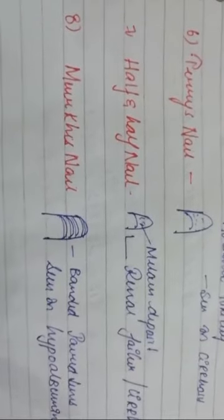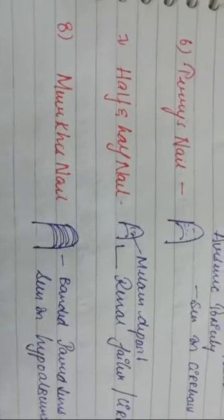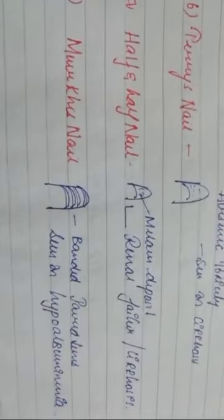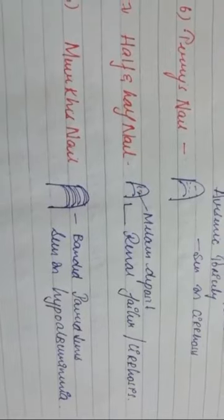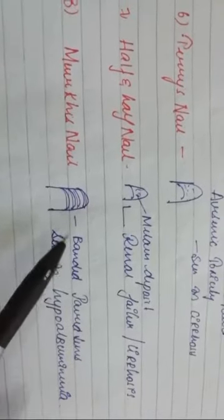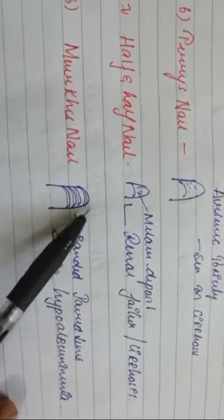The next point is Muehrcke's nail. These are paired white lines seen in hypoalbuminemia. If a patient has hypoalbuminemia, they will have these banded paired lines on the nail, known as Muehrcke's lines. To summarize nail lines: Mees' lines are transverse white lines in arsenic toxicity; Terry's nails show melanin deposits; half-and-half nail shows melanin in the lower half; and Muehrcke's lines are banded paired lines in hypoalbuminemia.